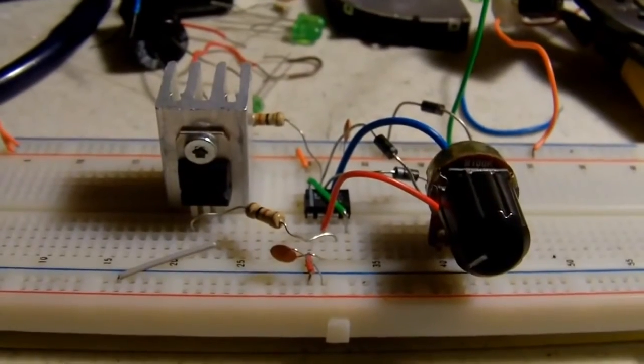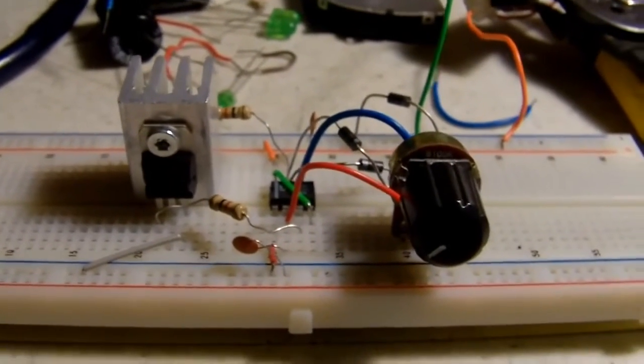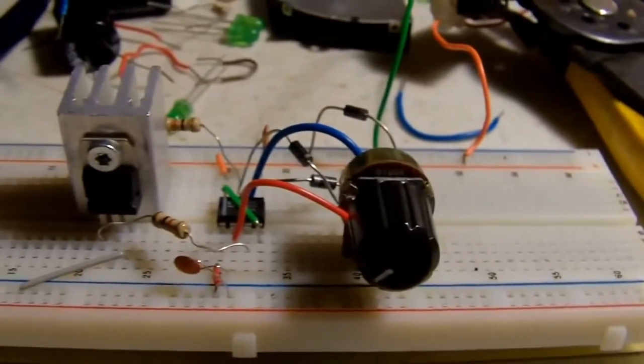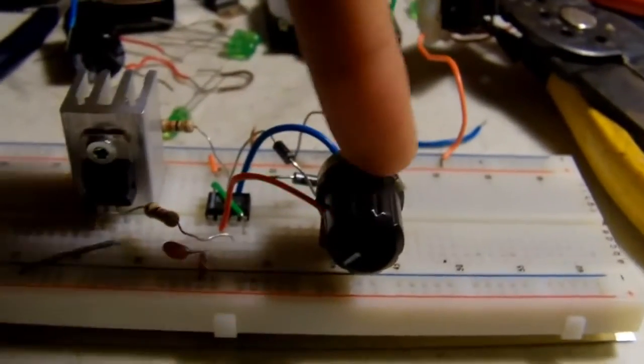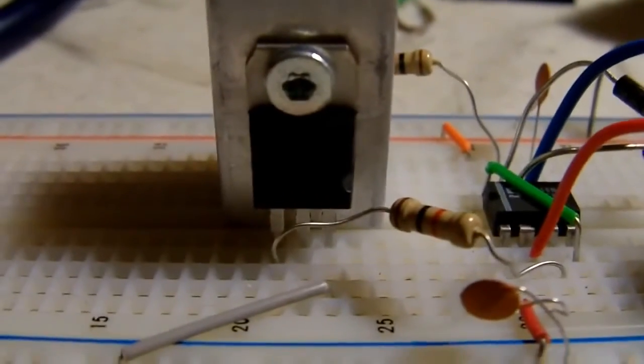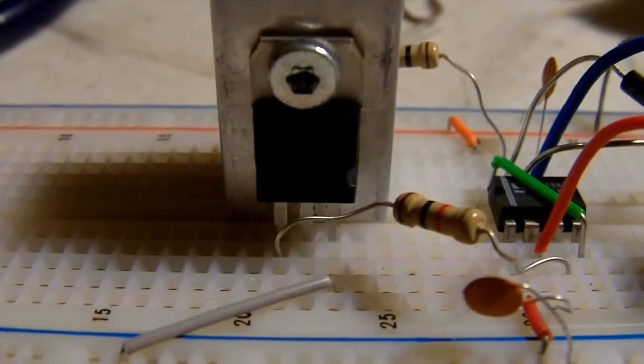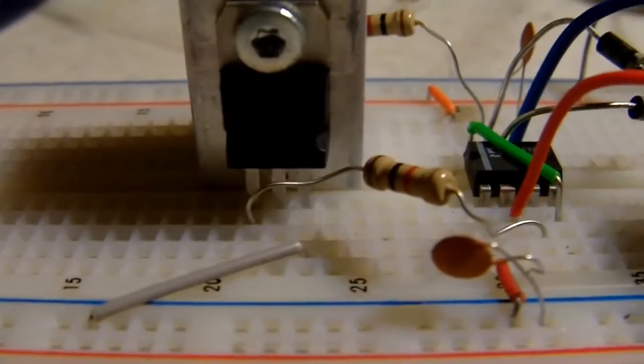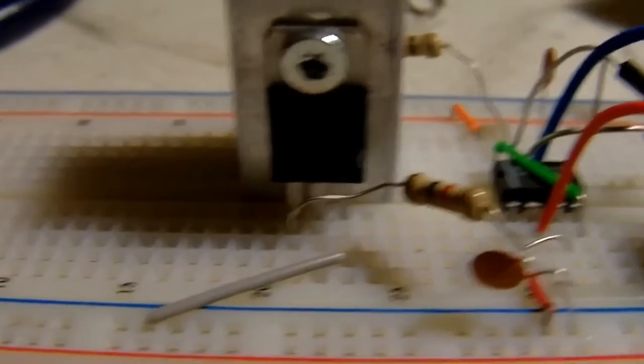Alright, update. I changed out the cermet pot for a taper pot, right there. The second pin of our transistor will be our new ground, the pulse width modulated ground.